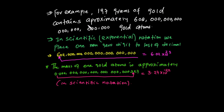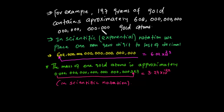For example, 197 grams of gold contains approximately 602,000,000,000,000,000,000,000 gold atoms. That number is very large, so in short, scientific notation gives us a compact way to express very large numbers like this.